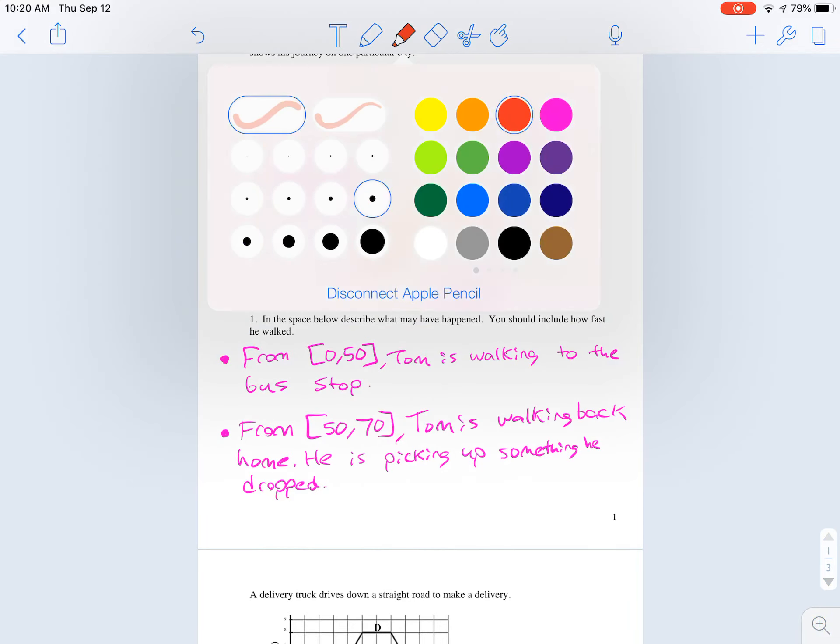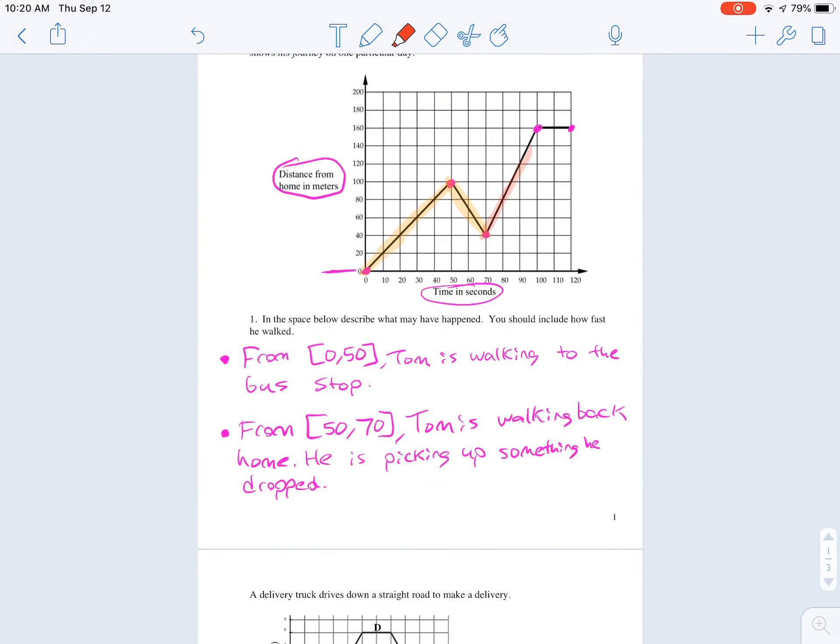Now we look at this time interval from 70 to 100. This time interval, his distance is increasing again. And he's walking faster now, because you notice he goes from 40 up to 160, which is an increase of 120 meters in just 30 seconds, where in the first 50 seconds, he went from 0 to 100. So he actually covered more distance in less time, which must mean he's moving faster. I'd say he might be running right now, because maybe he's worried about being late for the bus. From 70 to 100, Tom runs to the bus stop.